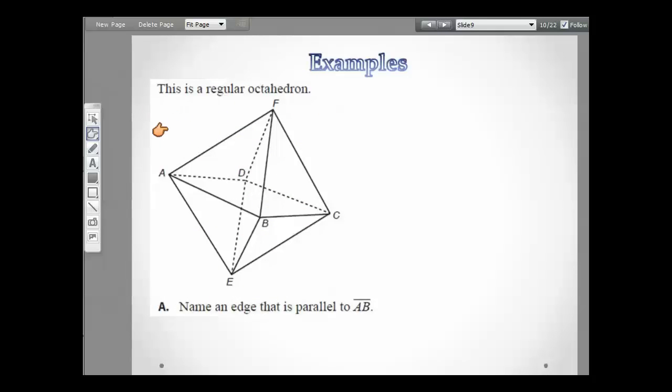Let's look at some examples. This is a regular octahedron, and remember regular means that everything's the same size. All the faces, all these triangles are the same size. Name an edge that is parallel to AB. So I like to go through here and mark these. There's AB. Well, obviously the segment that's going to be parallel to AB, because remember they never intersect when they're parallel, is going to be segment DC.